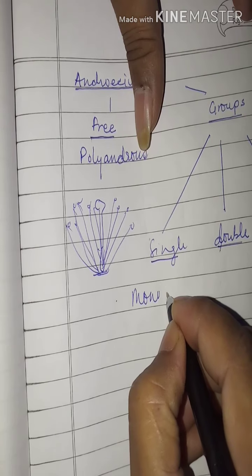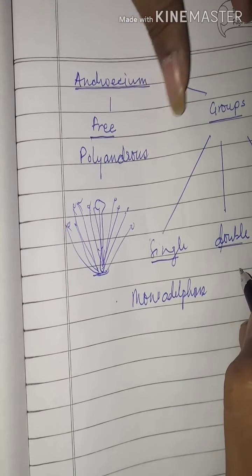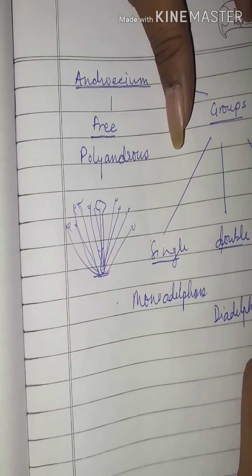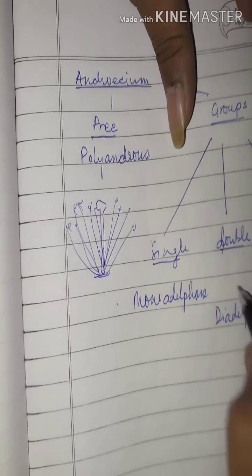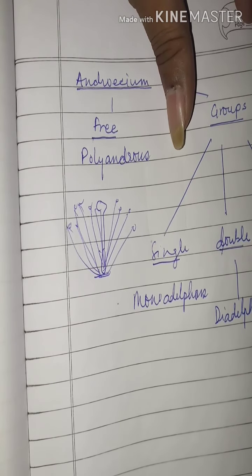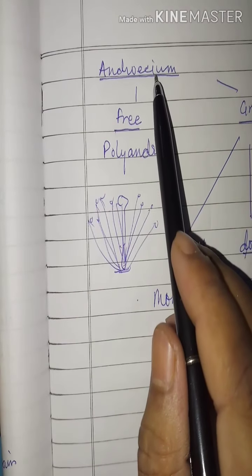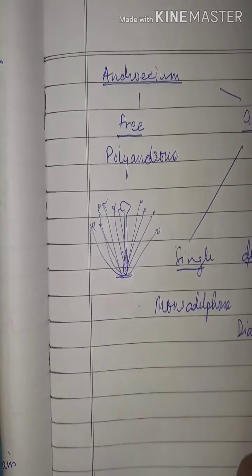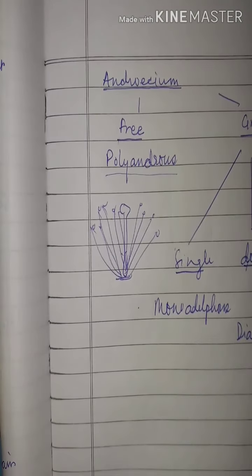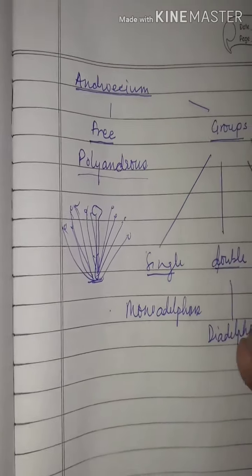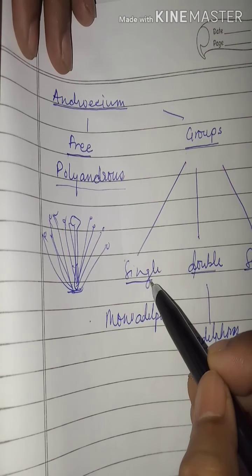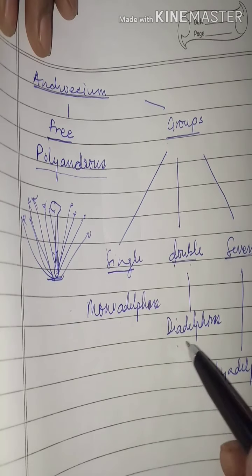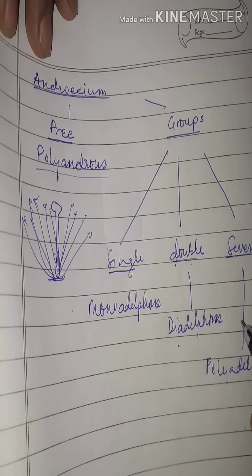If stamens are organized into a single group, it is known as monadelphous. If organized into a double group, it is known as diadelphous. If organized into several groups, it is known as polyadelphous.